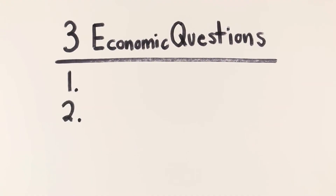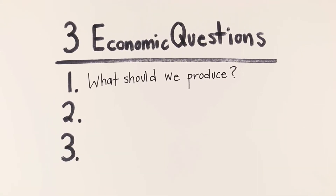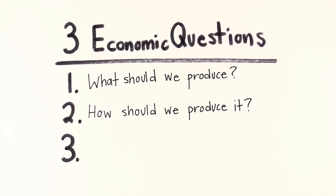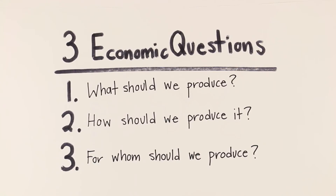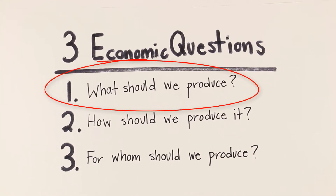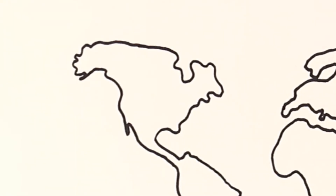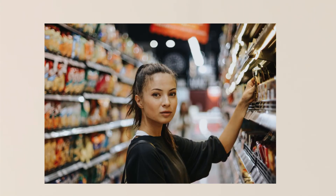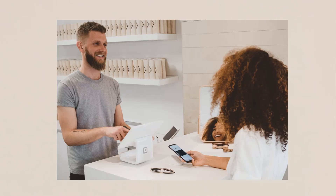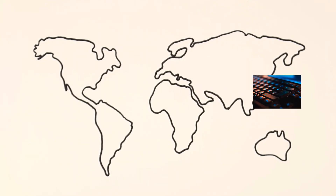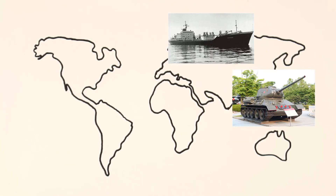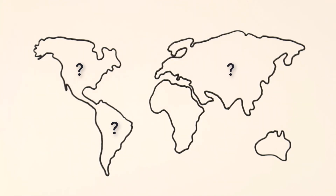Now we will discuss the three economic questions: one, what should we produce? Two, how should we produce it? And three, for whom should we produce? Every country must answer these three economic questions. First, what should we produce? In the United States, we produce mostly consumer goods and services. Consumer goods are different products manufactured for personal or household use. In contrast, countries such as Japan manufacture a great deal of equipment for business and government use, while countries like Russia and North Korea have concentrated their resources on manufacturing military goods.